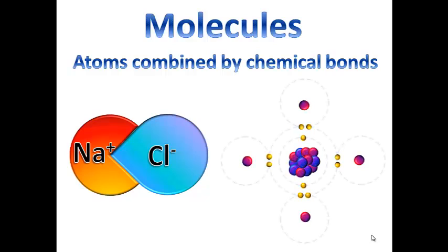Or, valence electrons can be shared between two different atoms to form a covalent bond, as is the case with this methane molecule, where one carbon atom and its one, two, three, four valence electrons are shared with the one valence electron of four individual hydrogen atoms.